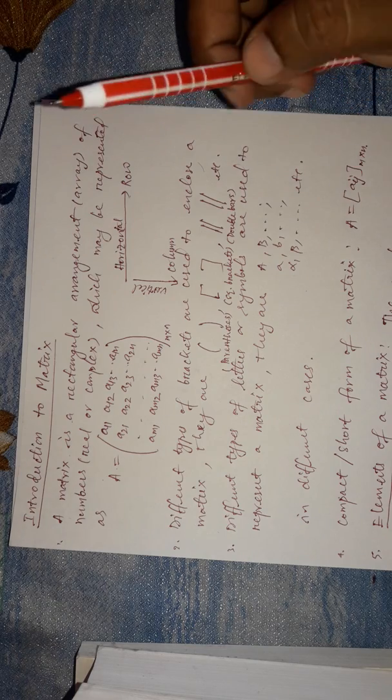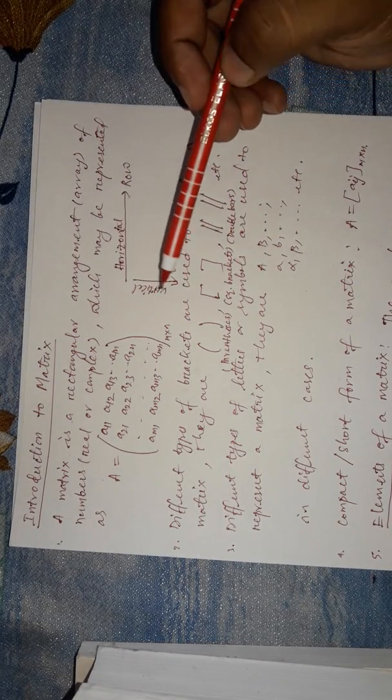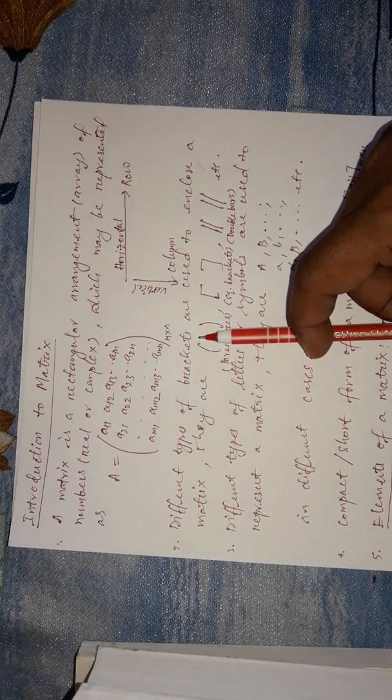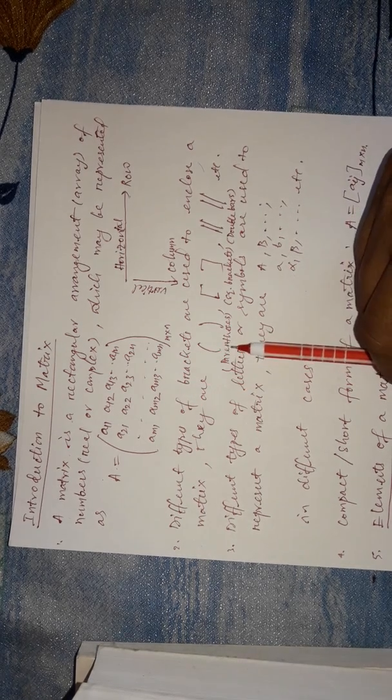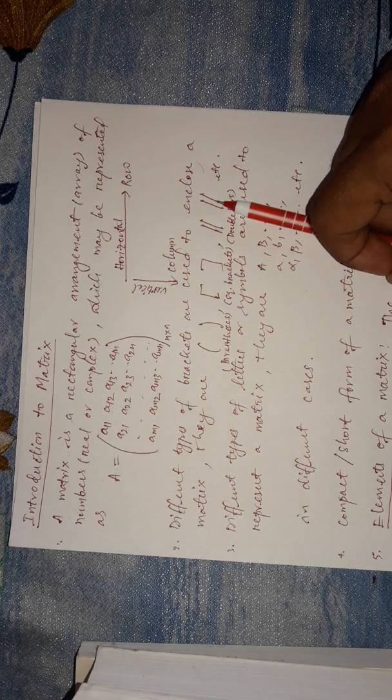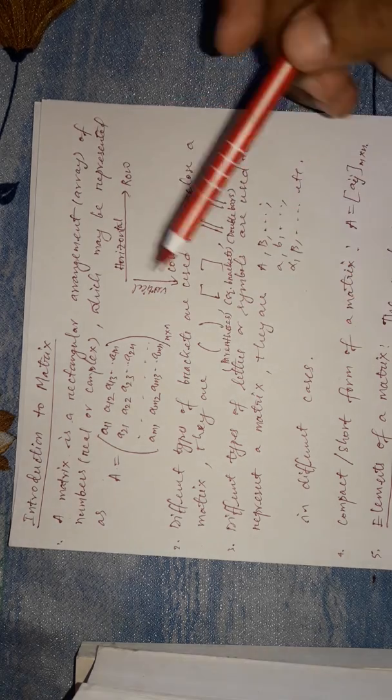Now, how do we symbolize or show that we are writing a matrix? For that purpose we use different types of brackets — these brackets represent the matrix. The commonly used brackets for the matrix are parentheses or round brackets, square brackets, and in many cases double vertical bar brackets are also used. These three brackets are widely used to represent a matrix.